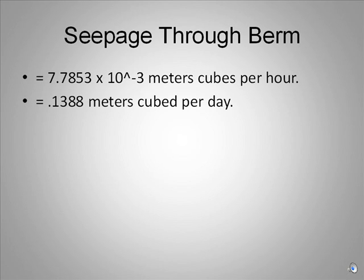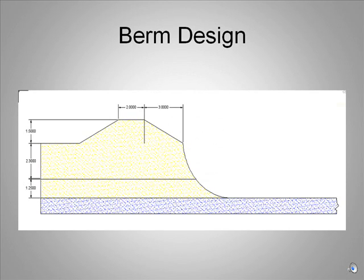These slides show the calculations that were carried out to obtain these results. This diagram shows the design which our group decided to choose. The sides of the berm have a slope ratio of 2 to 1. It will be made from the clay material found on site. This material is almost fully impermeable, so we opted not to use a membrane.